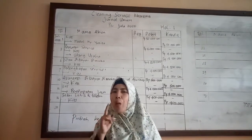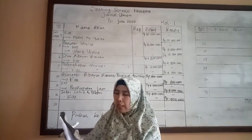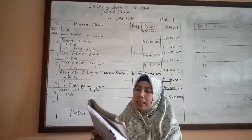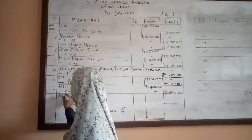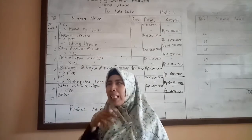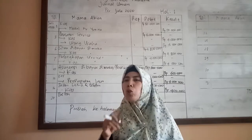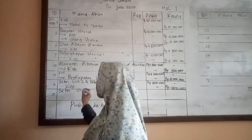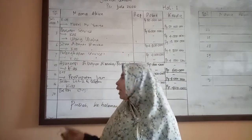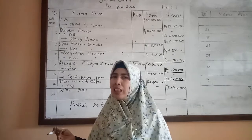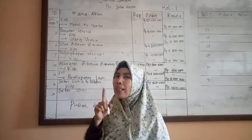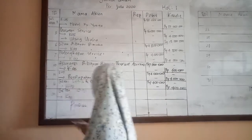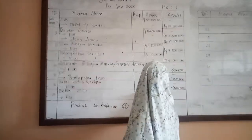Tanggal 20, pembayaran gaji pegawai sebesar Rp3.000.000. Kalau membayar gaji berarti beban gaji. Karena tidak ada ketentuan untuk 2 bulan atau setahun, berarti untuk 1 kali transaksi, langsung beban gaji. Beban bertambah pada posisi debit. Karena membayar menggunakan uang, kas berkurang. Kas termasuk kelompok harta lancar, harta berkurang pada posisi kredit, sebesar Rp3.000.000.